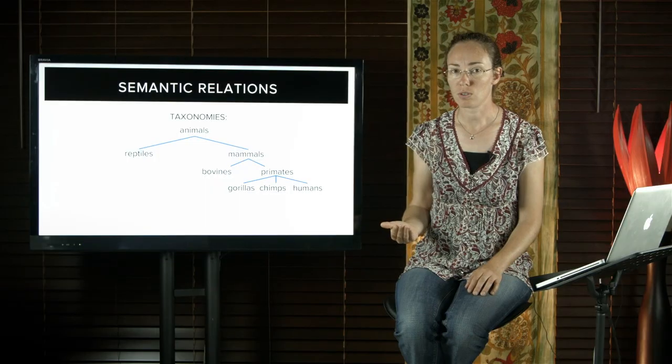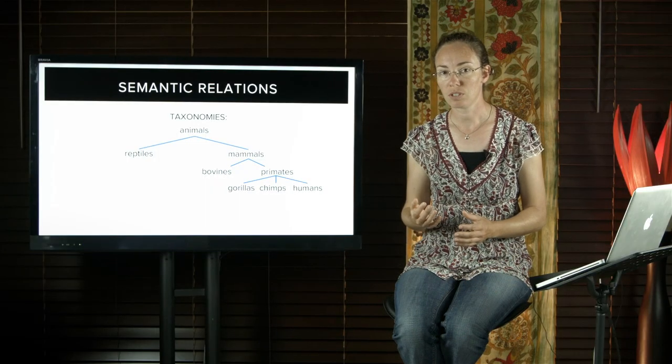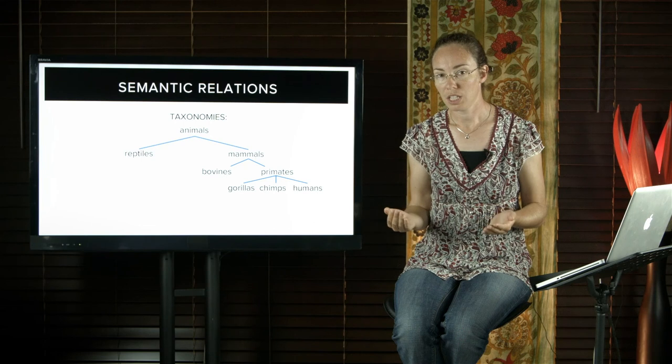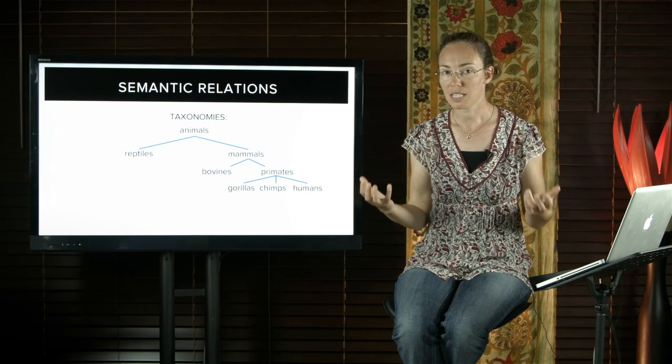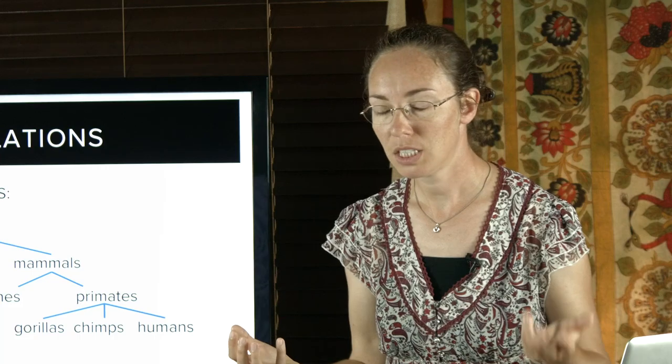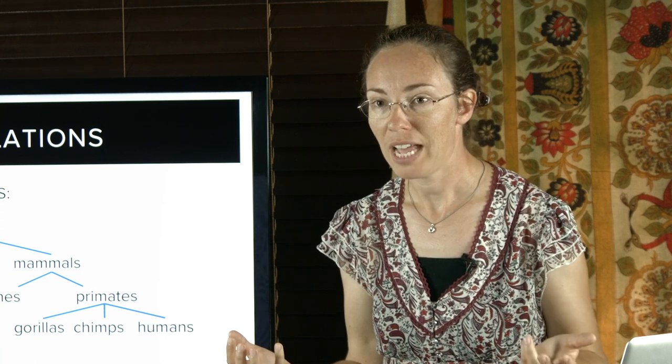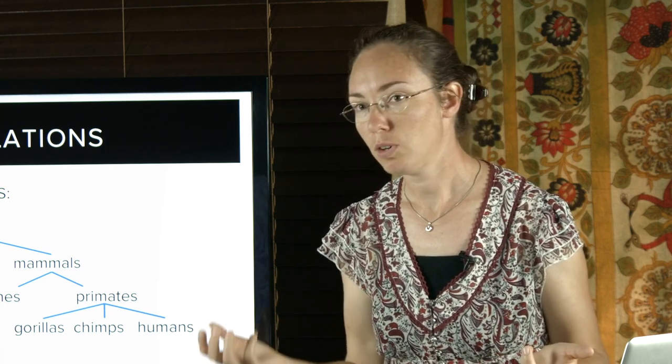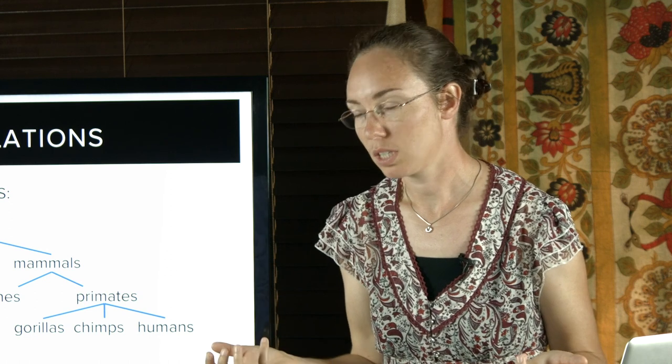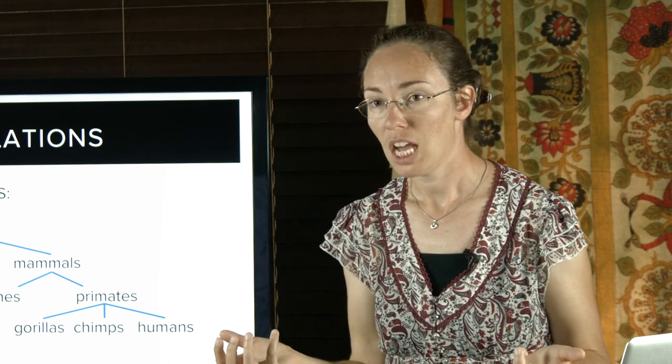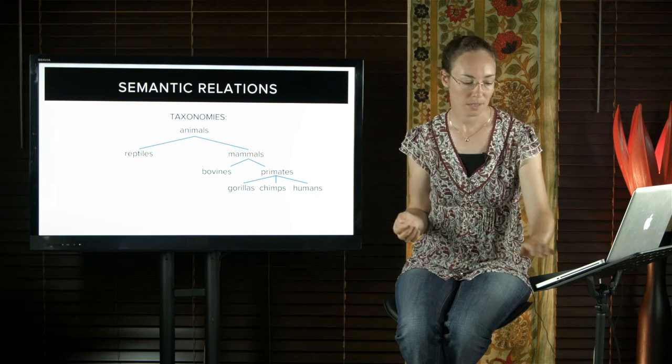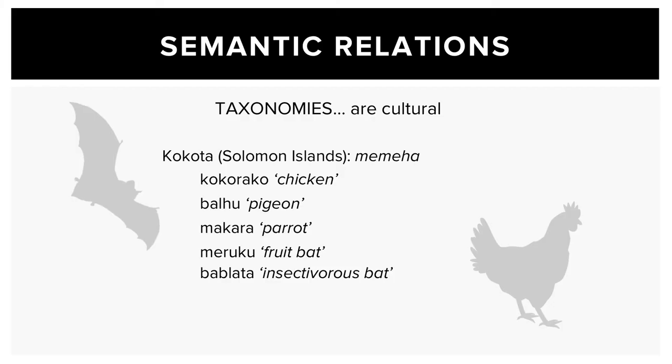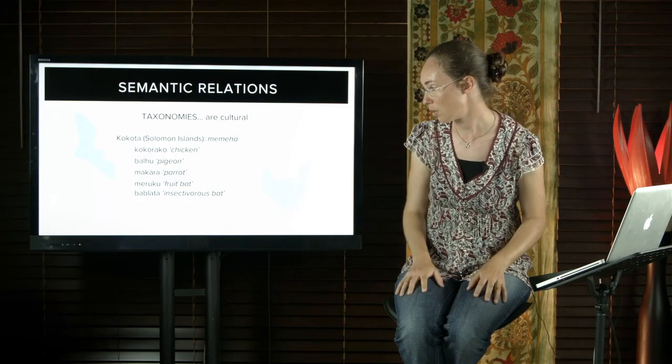Taxonomies are cultural. Different cultures divide up the world differently. For example, in English we would consider bird and bat to be separate taxonomies with pigeon, chicken, and parrot under the superordinate bird. But fruit bat and vampire bat we would not consider in that group. However, in Kokota in the Solomon Islands, the word memeha is the superordinate for the taxonomy that includes all of these: chicken, pigeon, parrot, and also fruit bat and insectivorous bat.